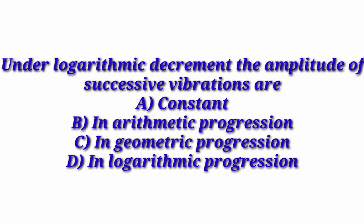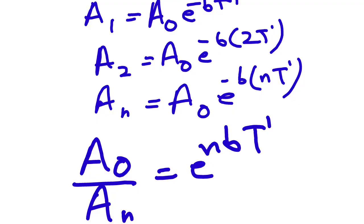Now look at this question: under logarithmic decrement, the amplitudes of successive vibrations are — (1) constant, (2) in arithmetic progression, (3) in geometric progression, (4) in logarithmic progression. Here, A₁ = A₀·e^(−bT′), A₂ = A₀·e^(−2bT′), and Aₙ = A₀·e^(−nbT′). So clearly the amplitudes are in geometric progression (GP).